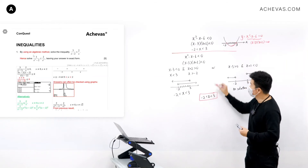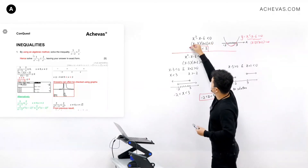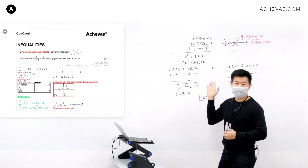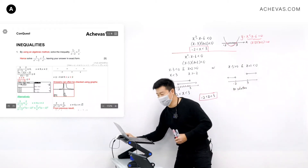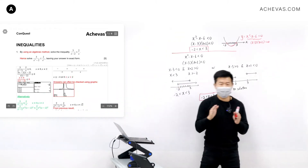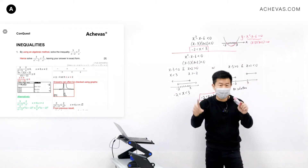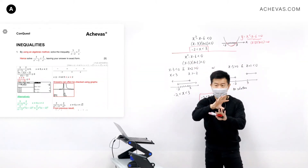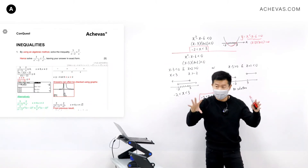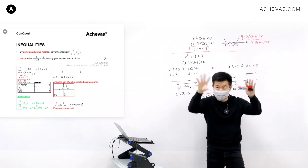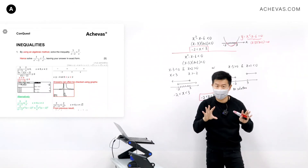But we know this type of question won't appear in H2 math. What will appear looks more like this — not just two things multiplied together, but one divided by another, or three, four, sometimes even five factors multiplied together. You can see how the algebraic analysis becomes much more difficult.